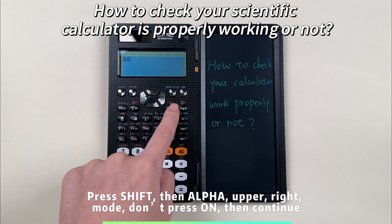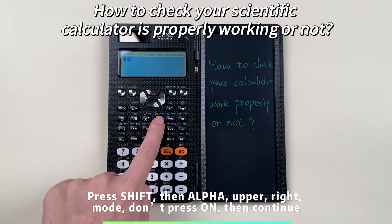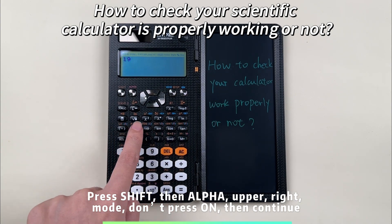Press shift, then alpha, upper, right, mode - don't press ON - then continue.